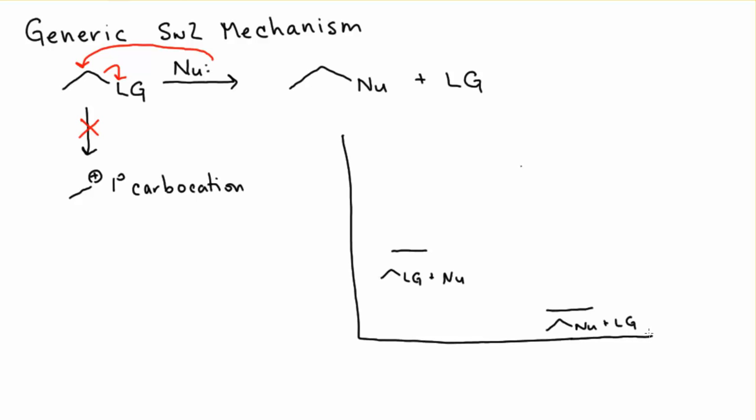There's no intermediate in this step, it all occurs in one step, and so all we have is a transition state between the two. The transition state is the bonds forming and breaking at the same time before they're fully formed or fully broken.